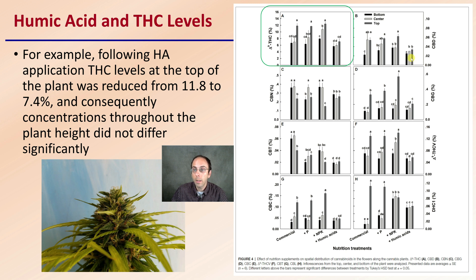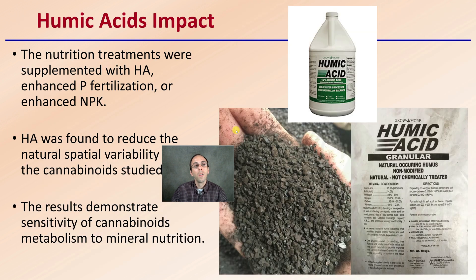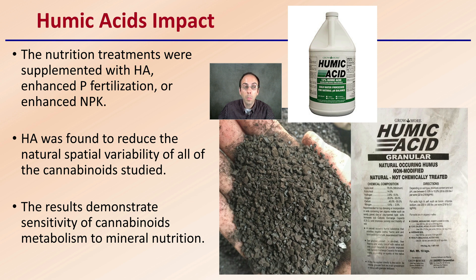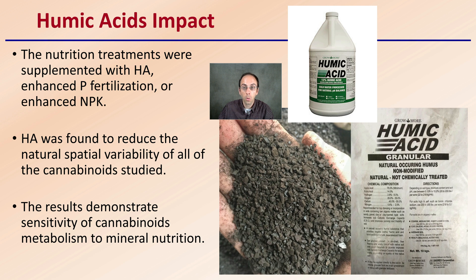We also see differences with CBD and CBG levels. Humic acid was found to reduce the natural variability of all of the cannabinoids studied. The results demonstrate the sensitivity of cannabinoid metabolism to mineral nutrition, so you want to be mindful that adding more inputs to your plants may not always get you more return.